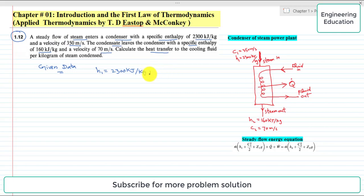Velocity at entrance c₁ is equal to 350 meters per second. Also, the condensate leaving the condenser has specific enthalpy which is 160 kJ per kilogram, and the velocity of the condensate leaving the condenser is c₂ and that is 70 meters per second.